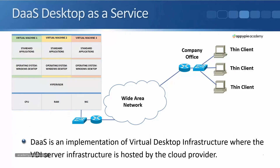The next example is DaaS, desktop as a service. Here, the customer has thin clients in their location. A thin client is basically a really low-powered terminal — it doesn't have enough CPU, RAM, or other resources to run a standard desktop operating system like Windows. The customer uses infrastructure at the cloud provider with hypervisors there, and virtual machines run the normal user desktop.